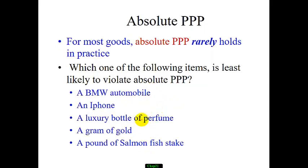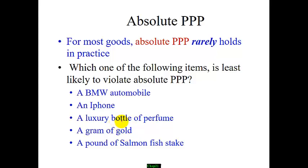Let's take a look at some examples: BMW, iPhone, perfume, gold, and fish steak. Which of these is least likely to violate absolute PPP — meaning the same good costs about the same amount of money everywhere? The answer is gold. Precious gold is more likely to hold absolute PPP.